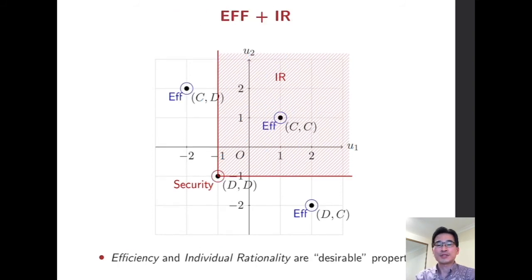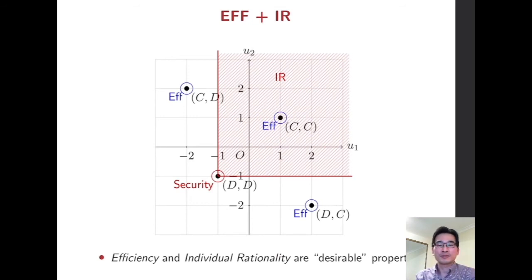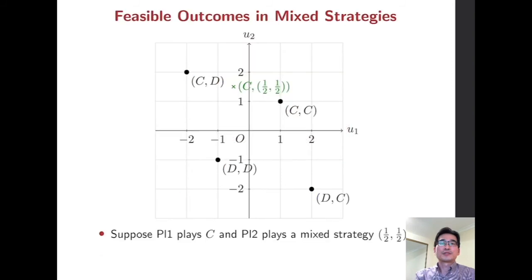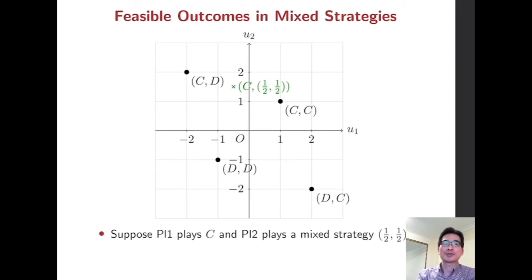Efficiency and individual rationality are both desirable properties. In this sense, CC is the only outcome that satisfies both efficiency and individual rationality. So far, we have considered four feasible outcomes obtainable by pure strategies.